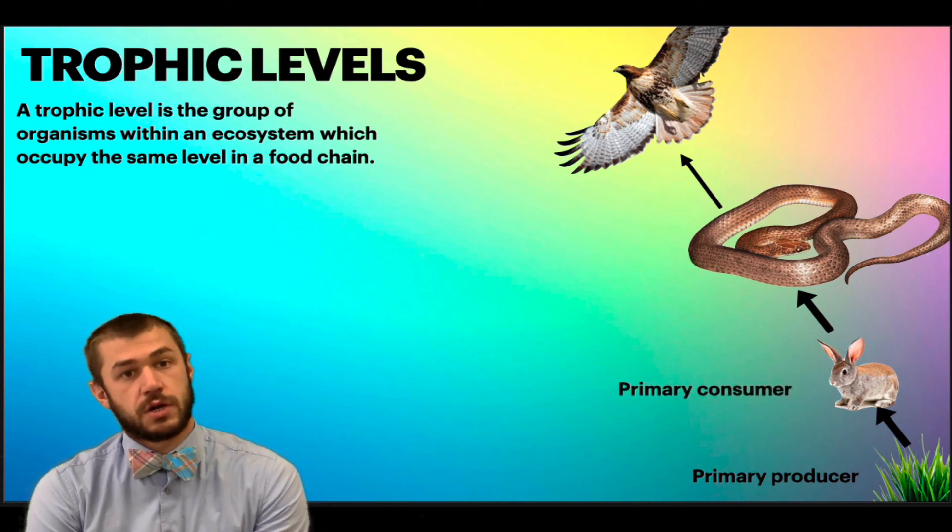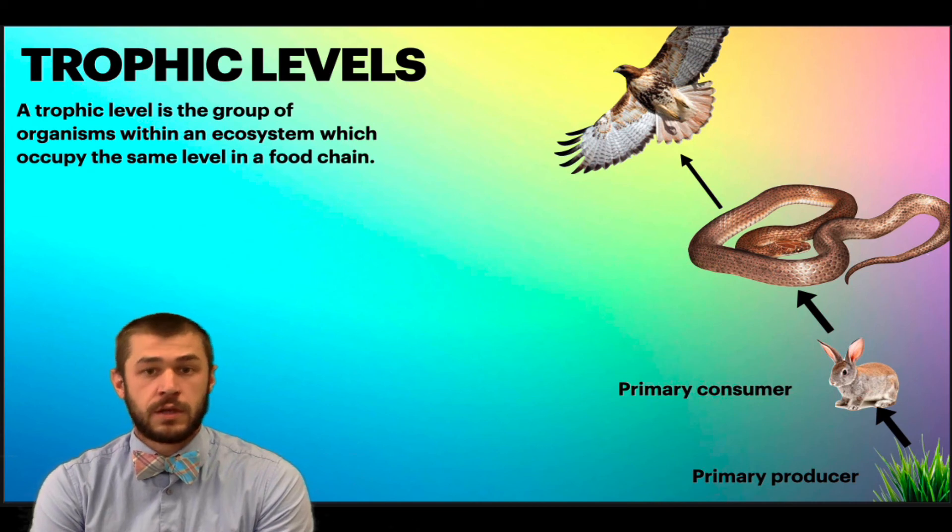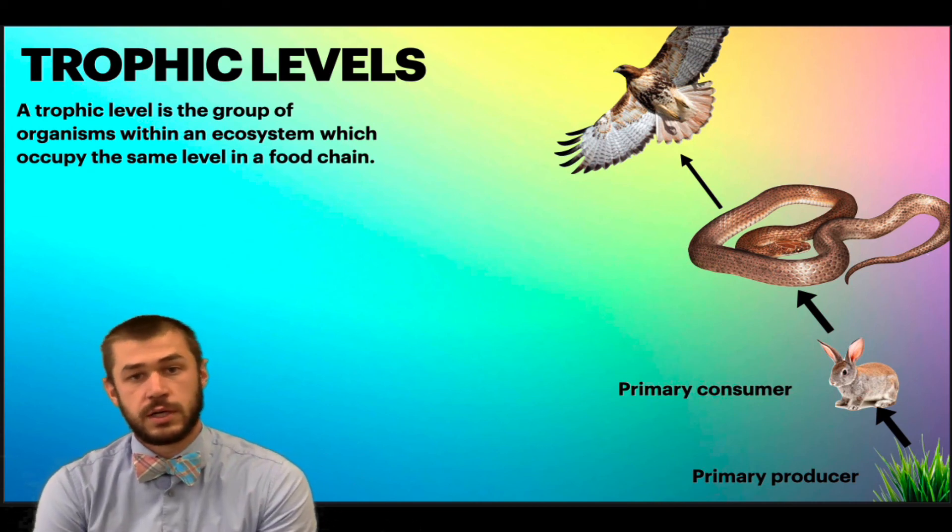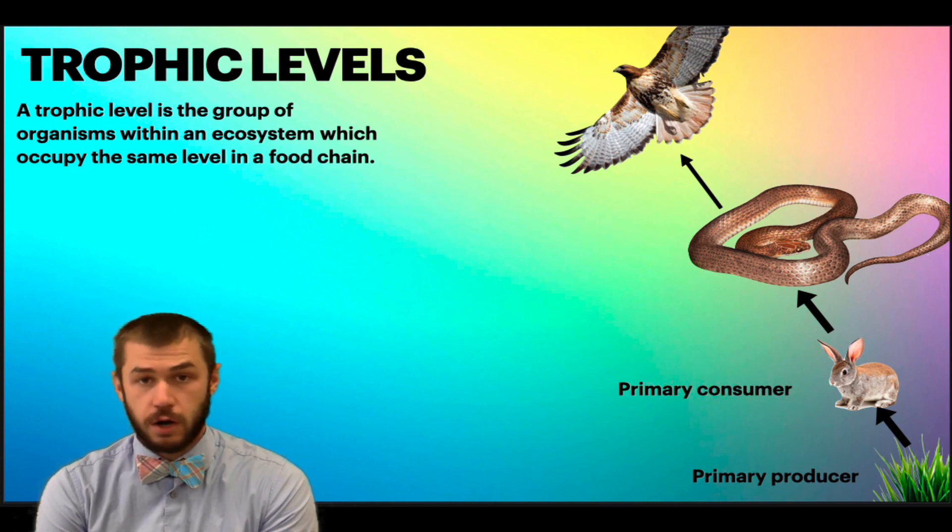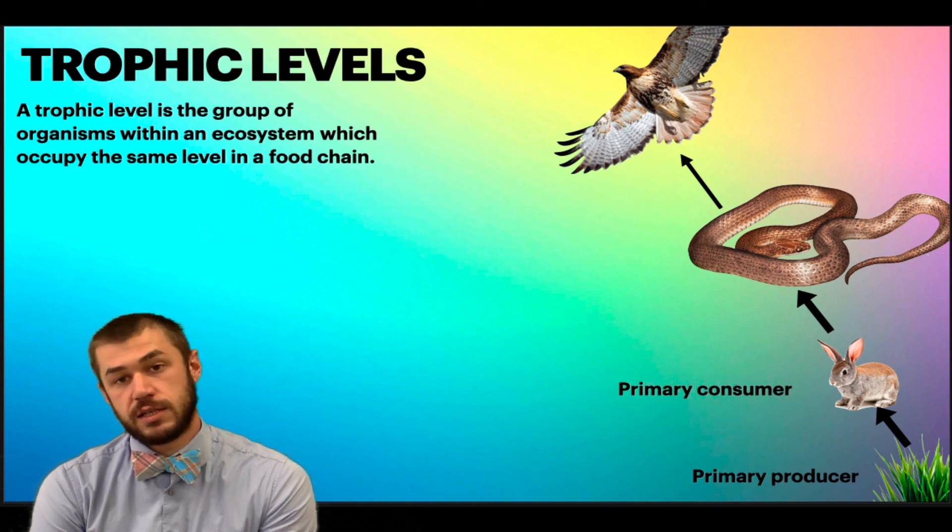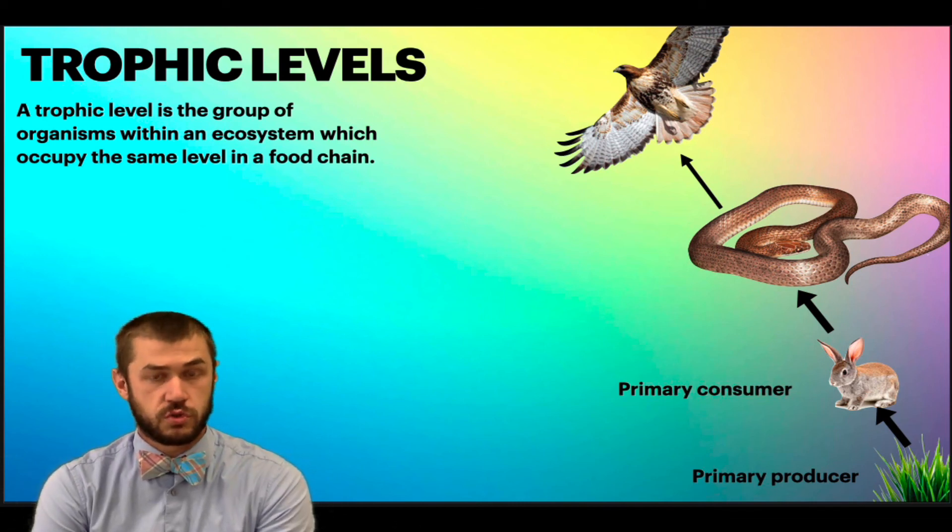Our primary consumers are the next trophic level, and those are going to eat autotrophs. So these are our herbivores. Our example here is a rabbit. It could be the mouse, it could be deer. Anything that eats plants is at that second level, the primary consumer.